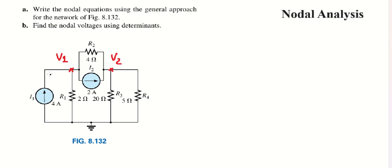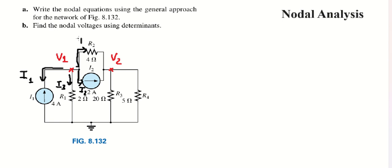For V number one, we can see that the currents will go this way, this way, and this way. So we label these as I number one, I number two, I number three, and I number four.